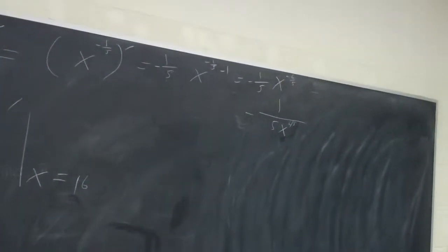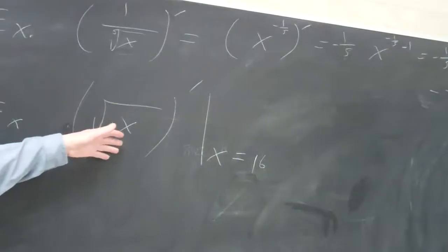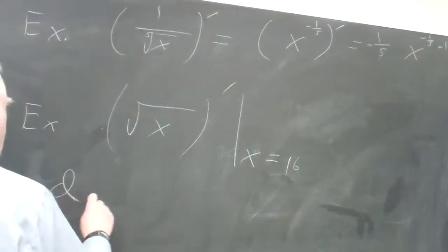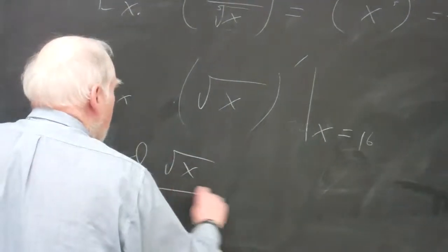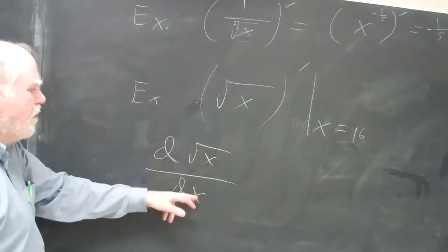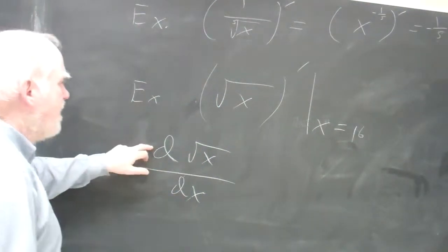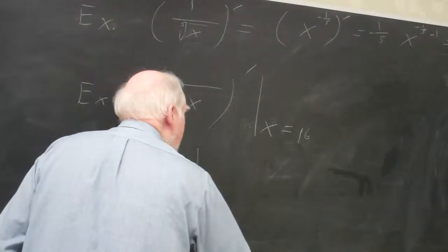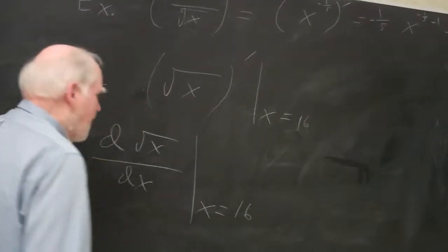By the way, talking about evaluations, here's one. You can write it with prime notation, that's perfectly good. Or you can write Leibniz notation if you wanted to. This is a little better if you have different variables because this will tell you you're doing it with respect to the independent variable x. They use the evaluation bar x equals 16, like that.